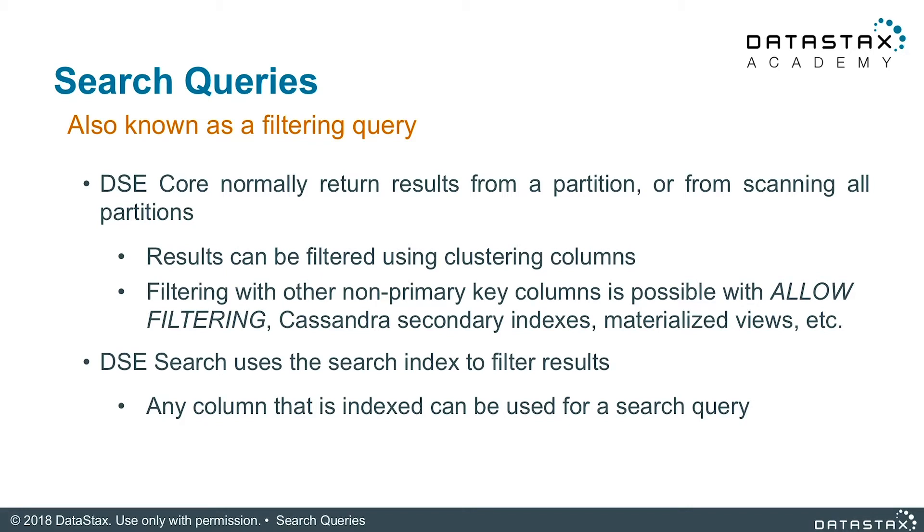Any column that has been indexed can be used in a search query. Using DSC Search, we now have the power to get the results we need by filtering results that are not a part of our partition key or clustering columns. Let's remind ourselves how queries work on DSC Core with a familiar ring architecture. This example shows how we can use a DSC Core query to filter based on partition key.